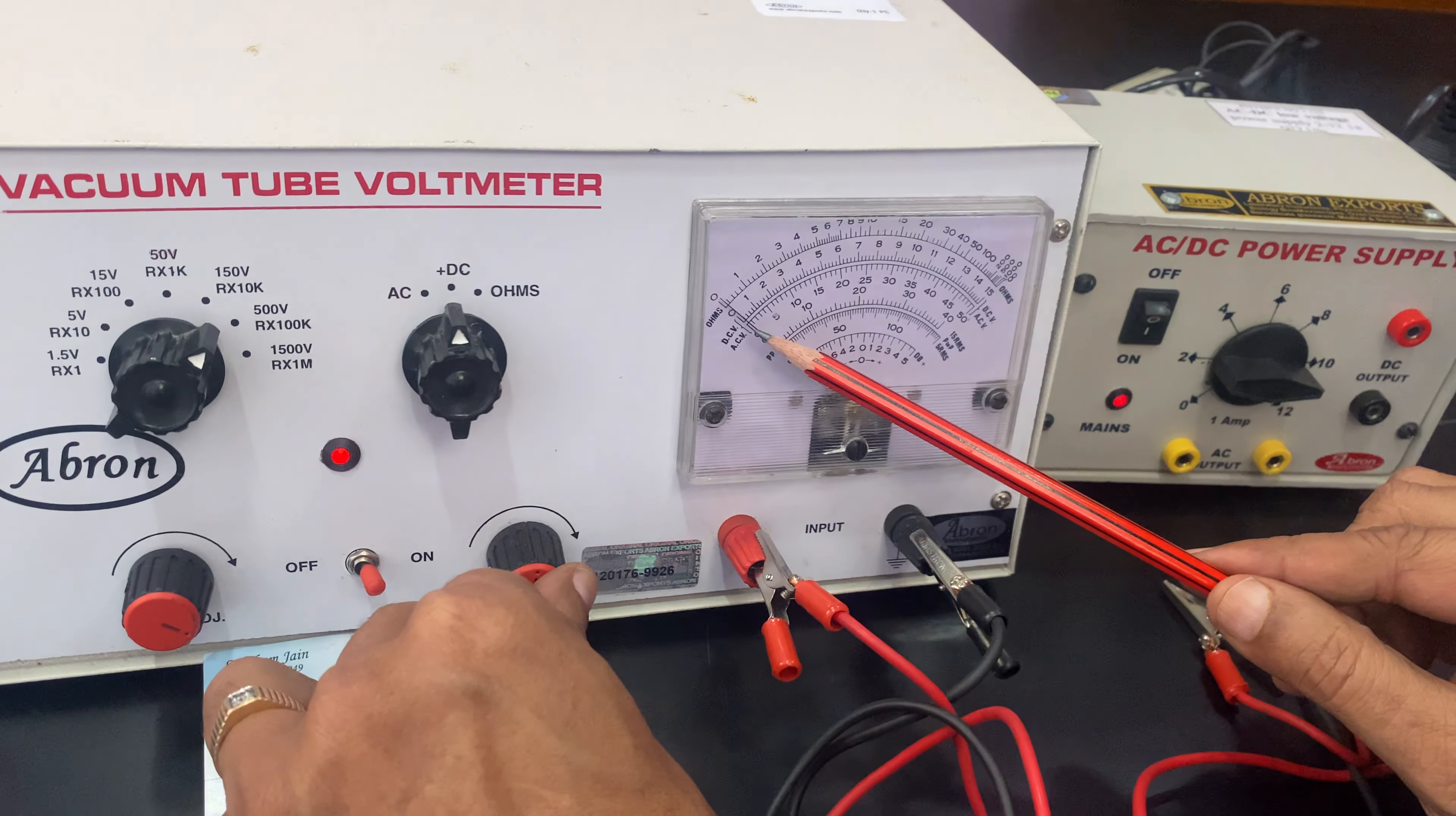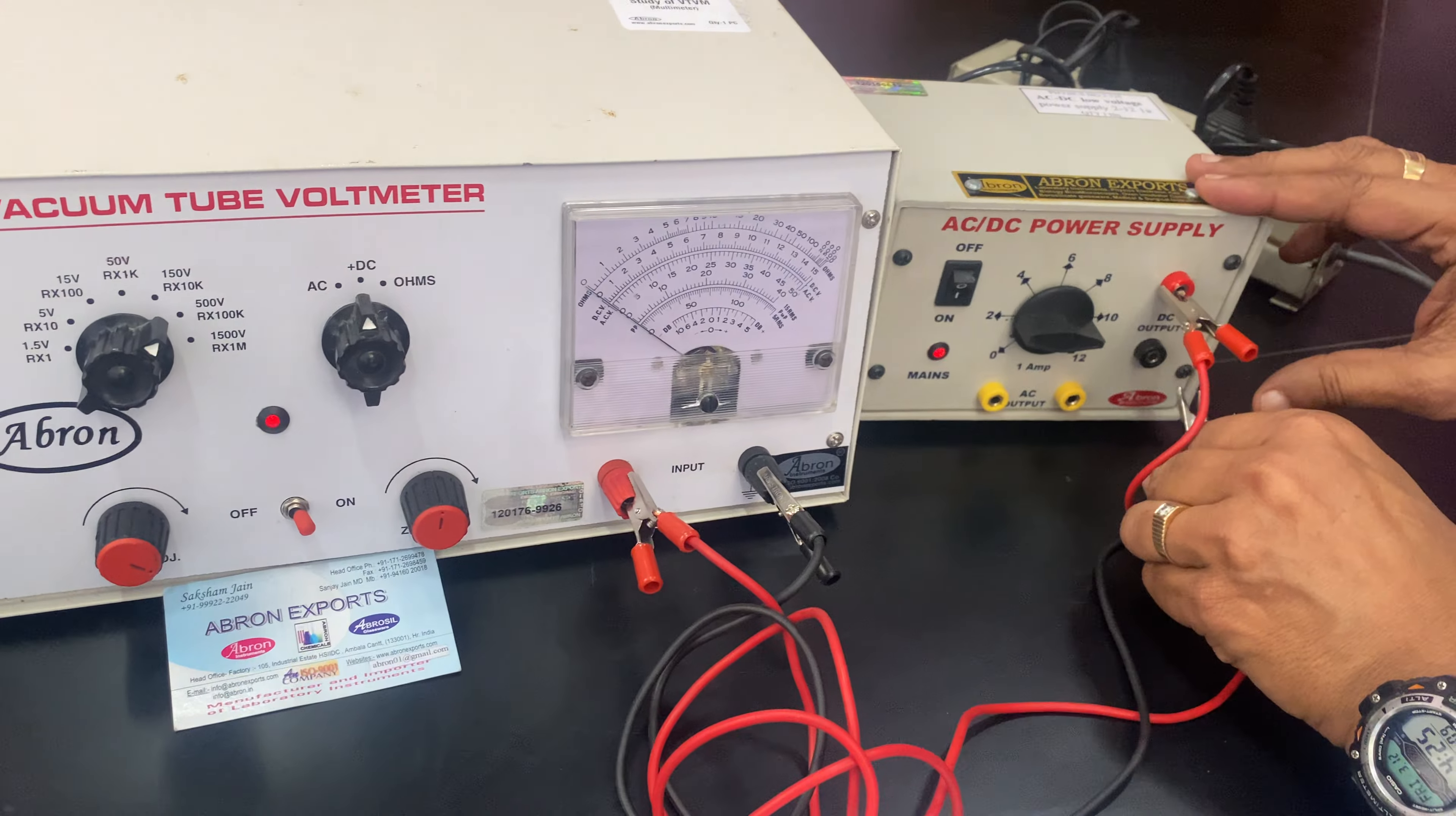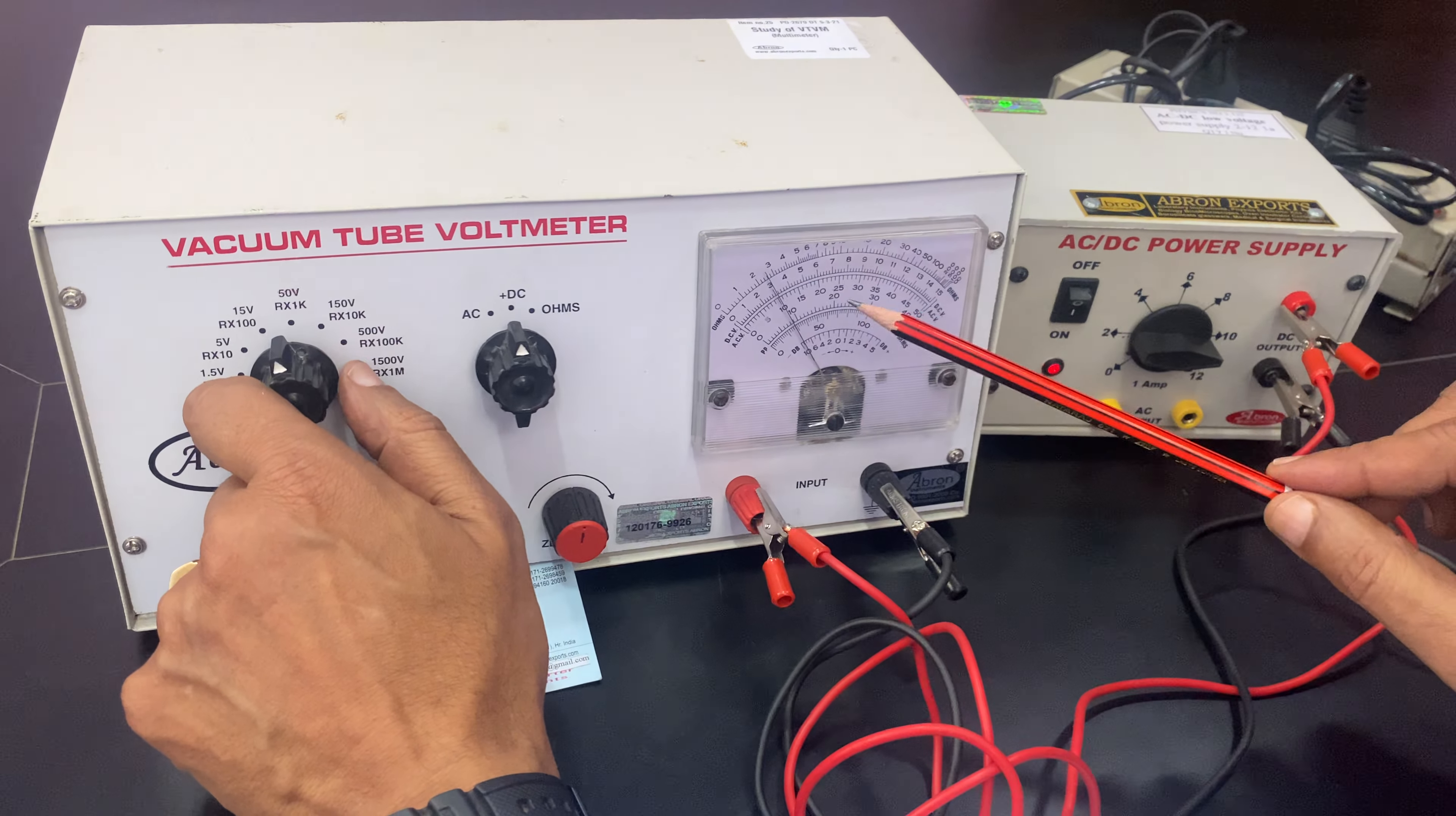First, adjust the voltage to zero. I have another power supply with me. I'm connecting this to the DC power supply. When I connect it, I use the DC setting and start with the highest voltage for unknown voltage. Now it's coming in range.